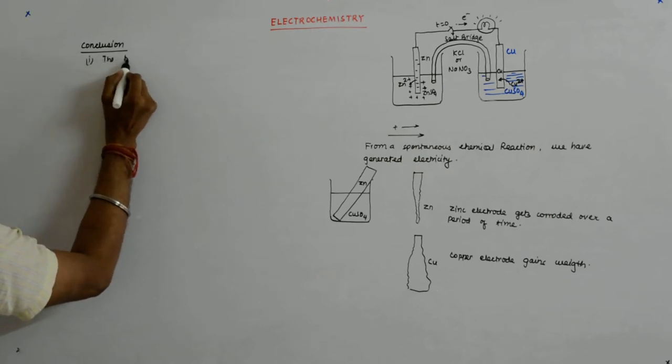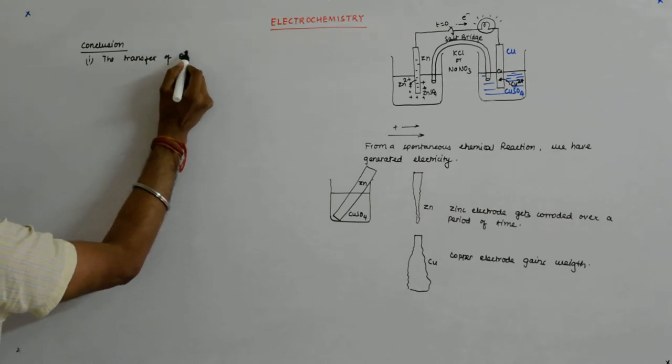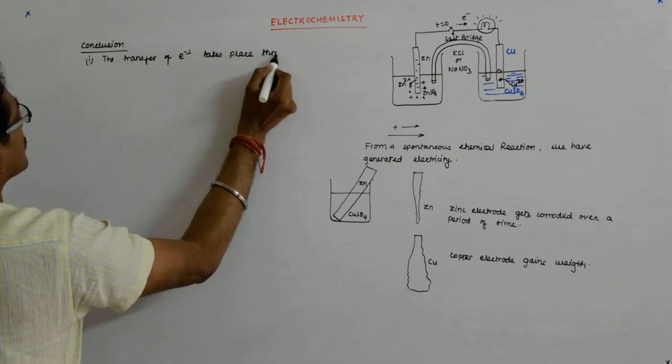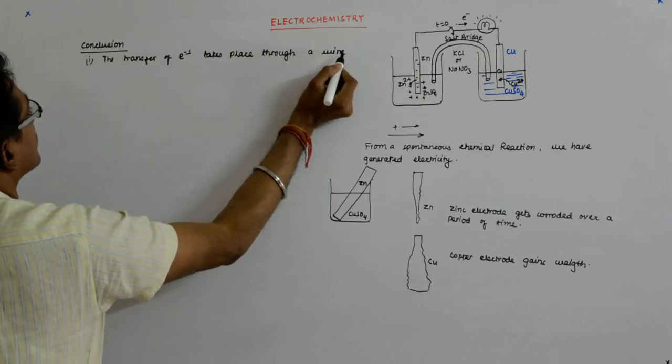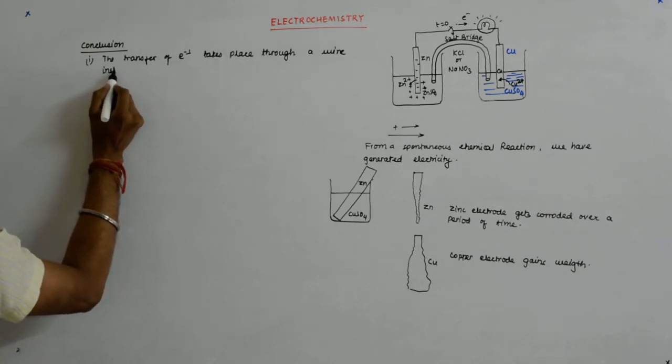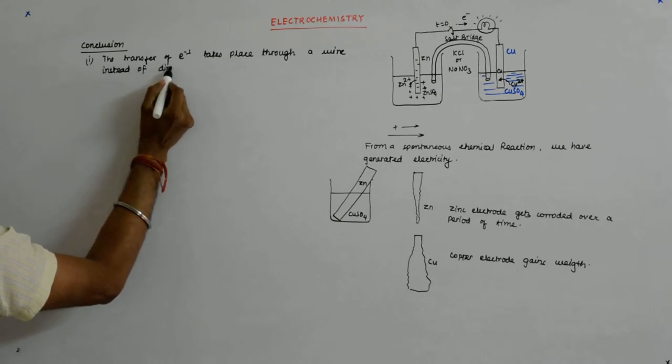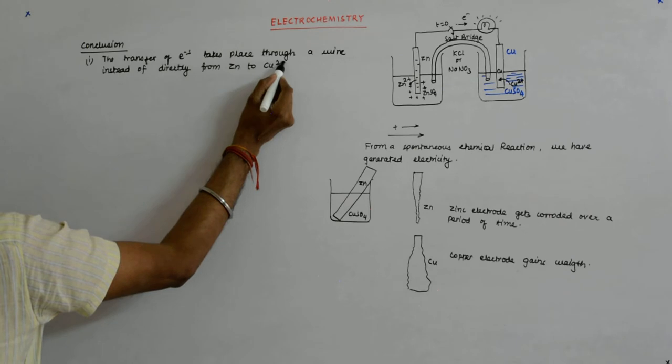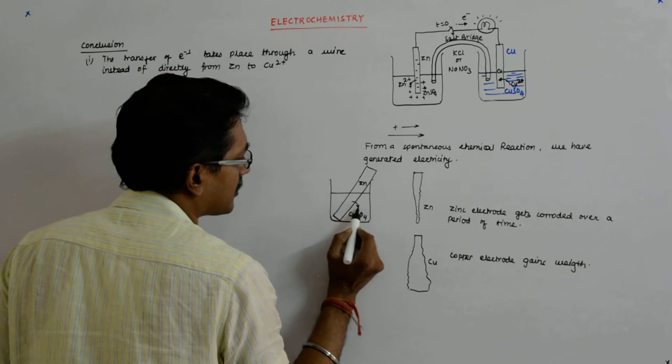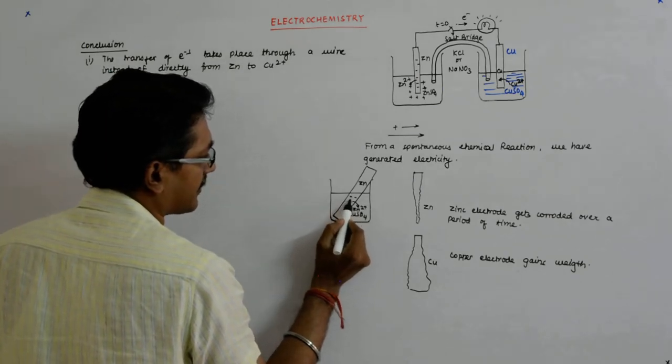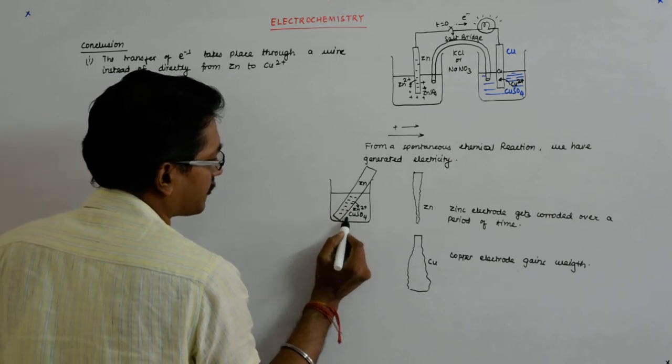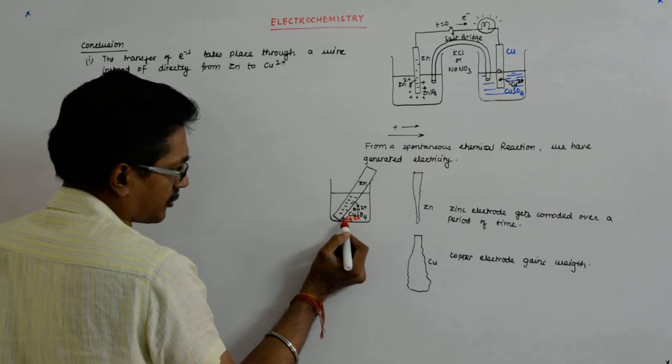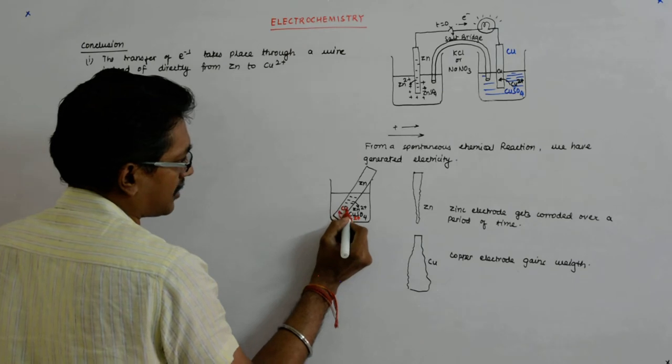That the transfer of electrons takes place through a wire, instead of directly from Zn to Cu2+, as in this case. Here we had seen Zn was becoming Zn2+, leaving its electrons behind. And somehow it was forcing the Cu2+ here, which was found in the salt solution, to take these electrons and become Cu.